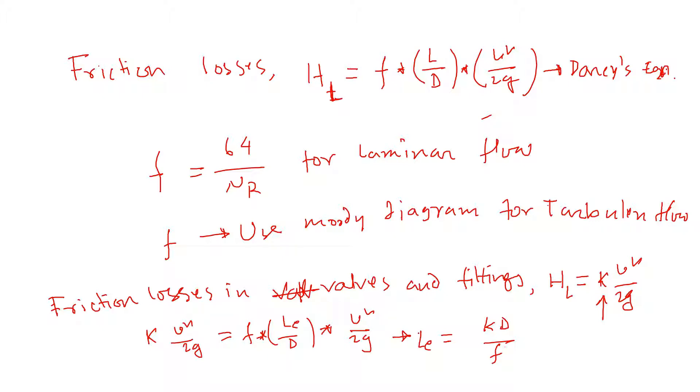Most of the time this equation is used. Once we find the total length of pipes plus the fittings length, add them all up and use that in Darcy's equation to calculate the friction losses.